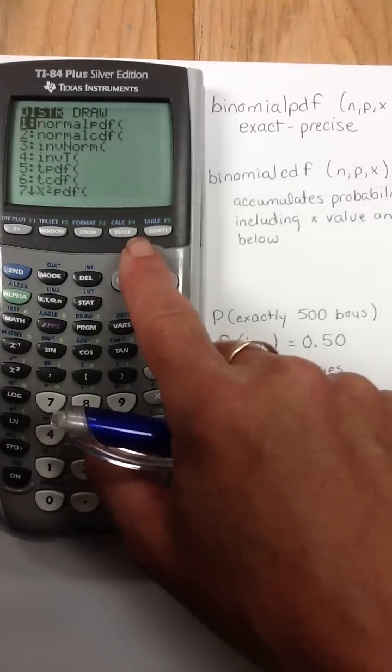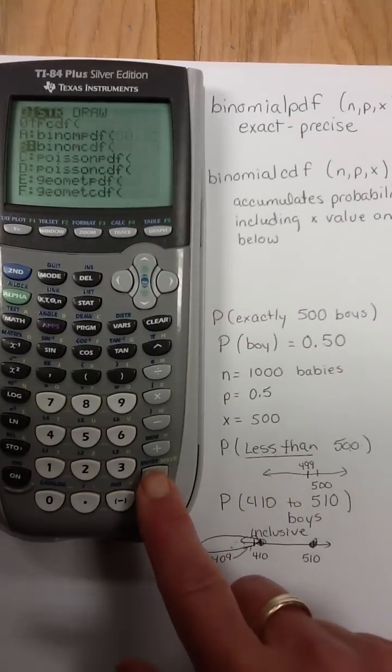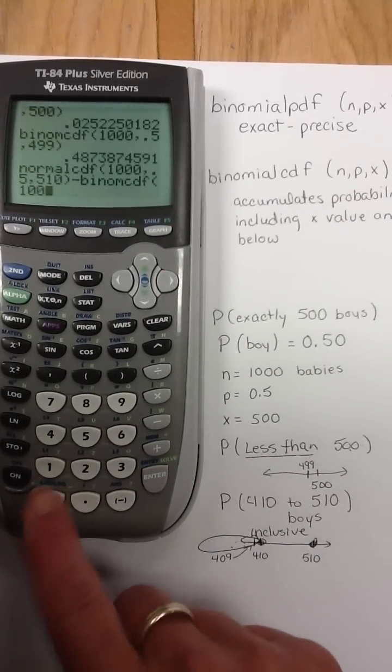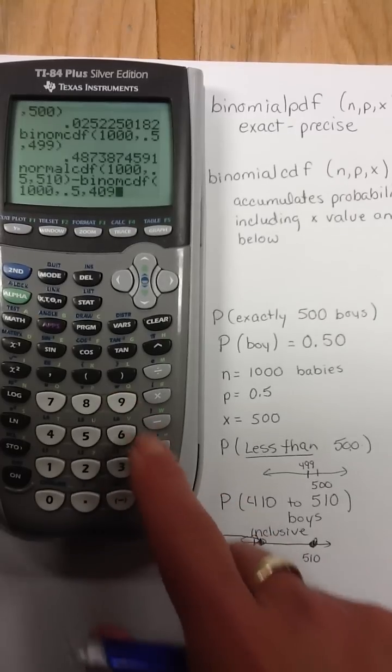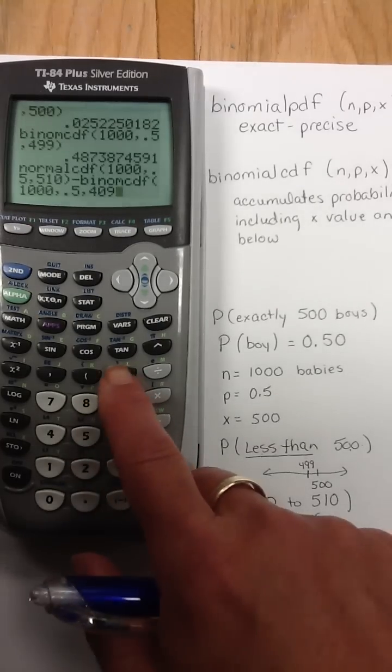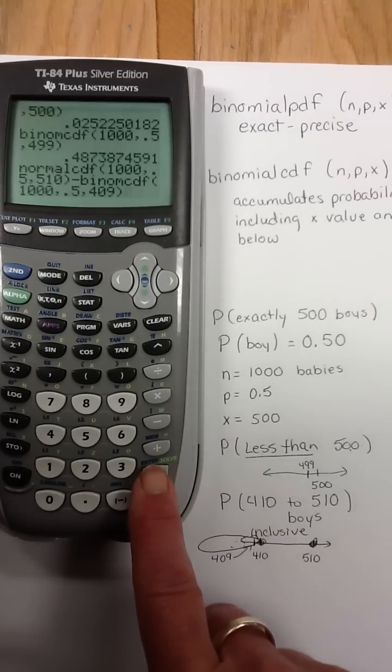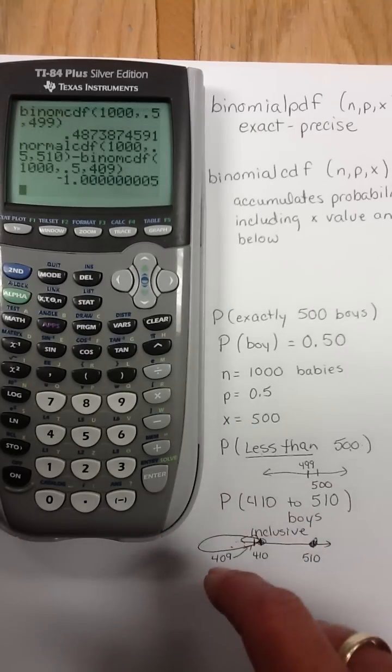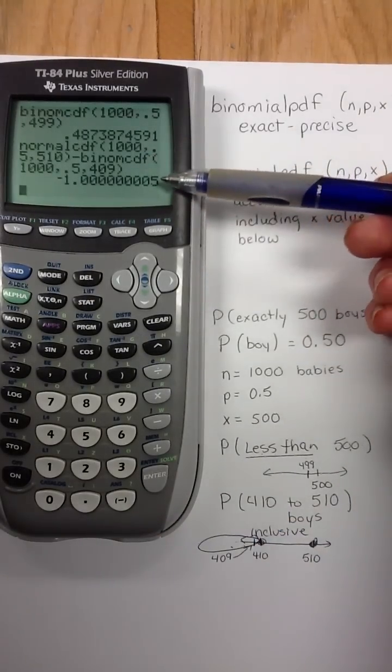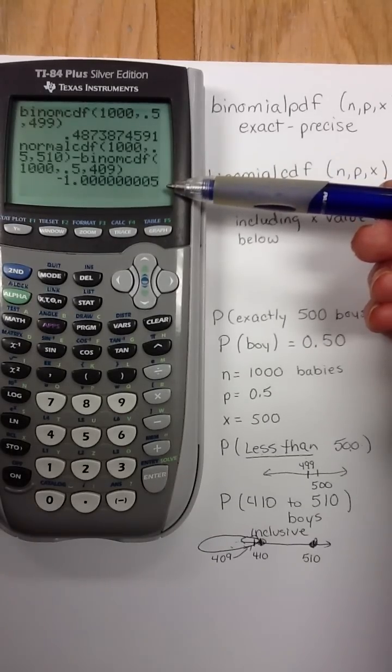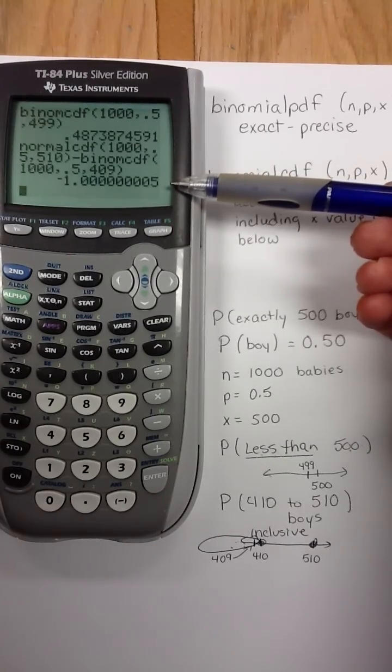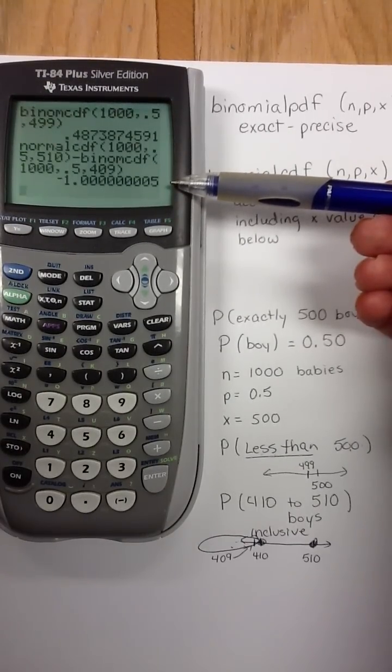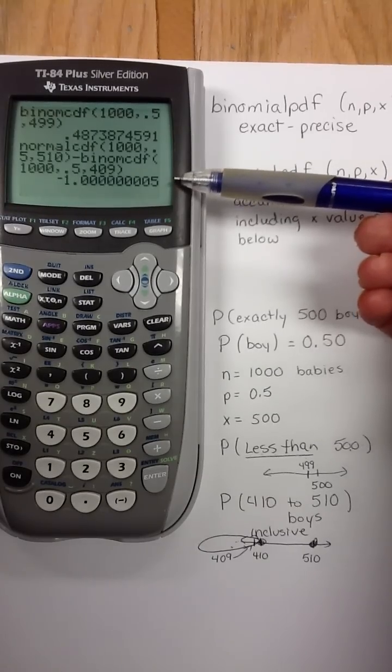So, the 409 on down will be subtracted out in that same statement. I can hit that distribution function, go up to cumulative, and then subtract out 1000, 0.5. I don't want to get rid of 410, so I've got to make sure that I go down to 409. And hit enter. And the probability, it gives it as a negative 1, but we never have a negative probability. So, what this ends up being is a probability of 1. It rounds to 100%, or 1.